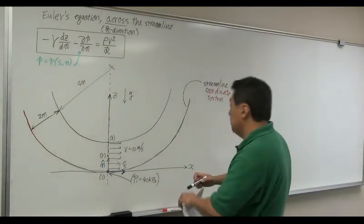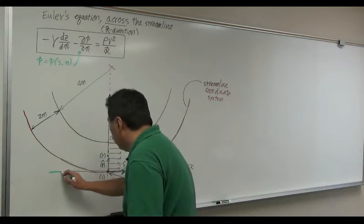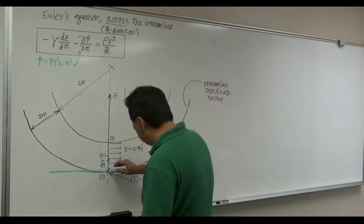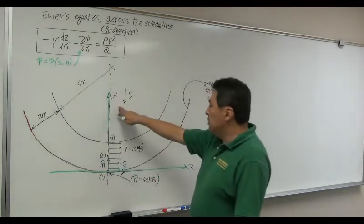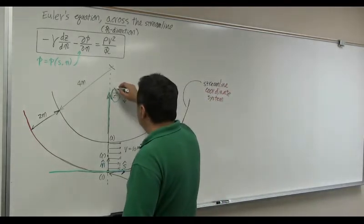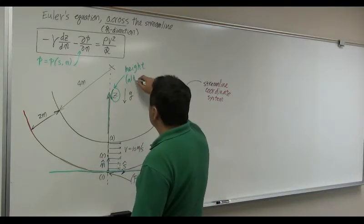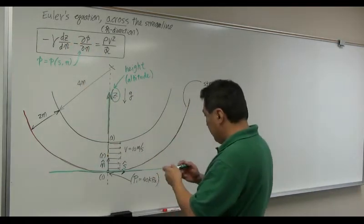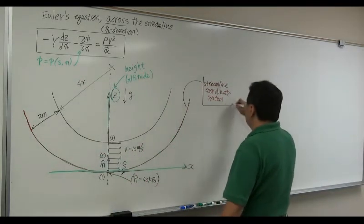This is Euler's equation in the direction normal to the path called the streamline. First, let's begin with the inertial coordinate system — the coordinate system usually attached to us — with direction x and direction z. Direction z is chosen because it is opposite to gravitational acceleration. If you do that, z really means height, or altitude in aerodynamics. Then I choose this particular streamline as a coordinate system — the streamline coordinate system.